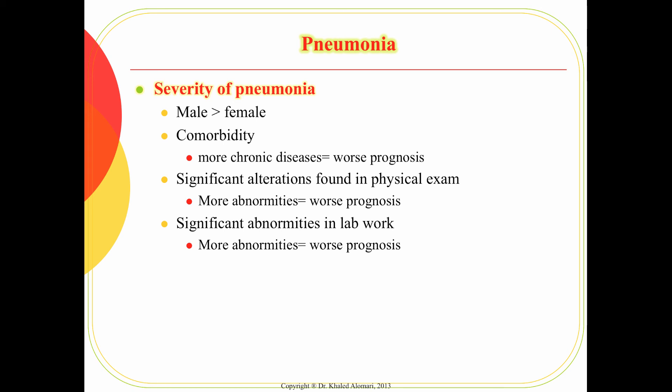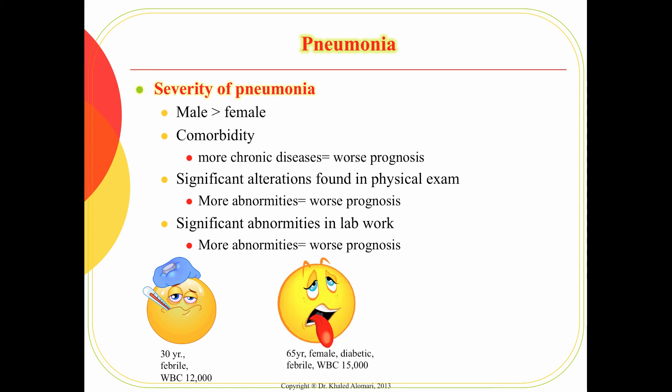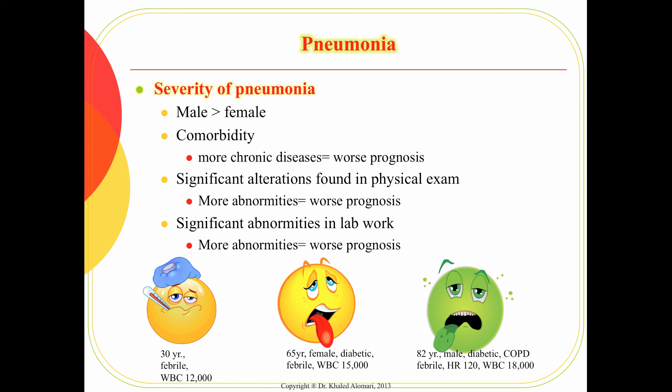To illustrate: a 30-year-old with a fever shows elevated white blood cells but not significantly. A 65-year-old diabetic female who gets pneumonia may show fever and higher white blood cells. An 82-year-old male with diabetes and COPD will show even more symptoms and a worse case — demonstrating that the more comorbidities, the worse the pneumonia.